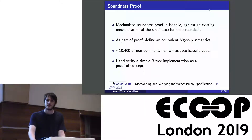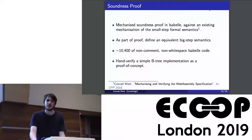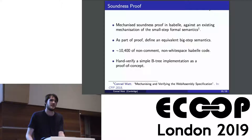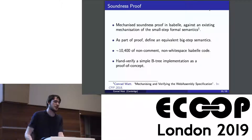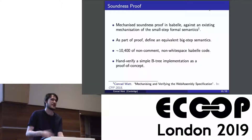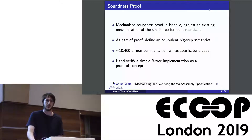Question: What kind of properties can you prove with this program logic? Answer: This is a separation logic, so in principle it should be just the same kind of expressivity you get from any separation logic proof for any language. Our specific aim with this logic was that when you're doing proofs about WebAssembly, it should be no harder than doing proofs about any other language in a separation logic style, even though you're dealing with this slightly weird control flow and slightly weird stack.